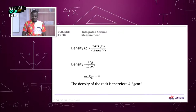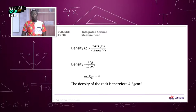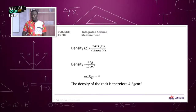Remember that if you want to convert grams per cm cube to kilograms per meter cube, you multiply by 1,000.